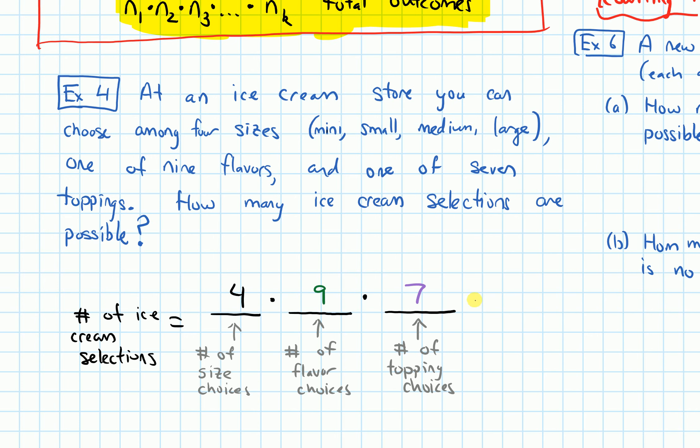So multiplying these numbers, four times nine times seven, we get 252. In total, there are 252 selections. And that's our answer.